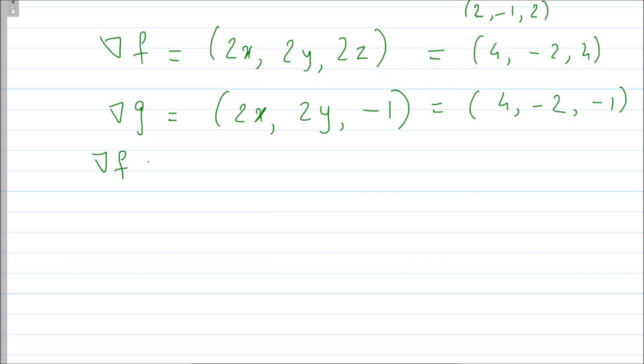Now if I take the dot product, what is grad F dot grad G? The dot product is nothing but 16 plus 4 minus 4 which is nothing but 16. What is mod of grad F? It is nothing but square root of 4 square plus minus 2 square plus 4 square which is root of 36 which is nothing but 6. And what is gradient of G? Square root of 4 square plus 4 plus 1 which is square root of 21.